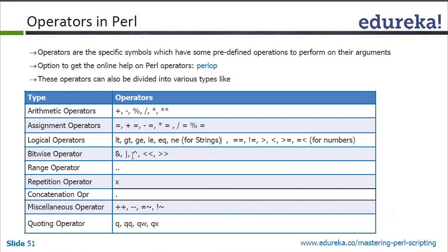Then you can clearly understand how Perl works and how we can make the code very small. The code size is actually very small in Perl because the lines of code are very few. We also have bitwise operators: AND, OR, XOR, left shift, right shift.